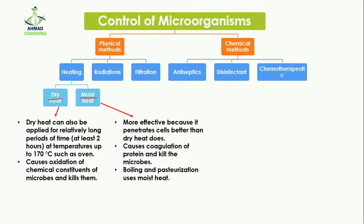Dry heat can be applied for a relatively long period of time — for example, for two hours at a temperature of up to 170 degrees Celsius, such as in an oven. This kills microorganisms by causing the oxidation of their chemical constituents.